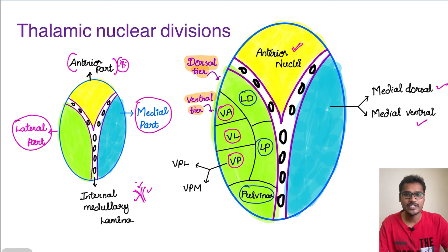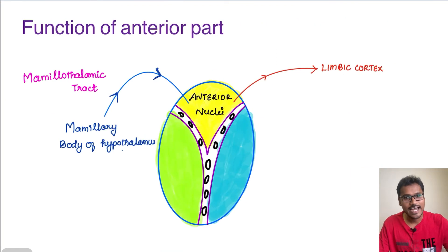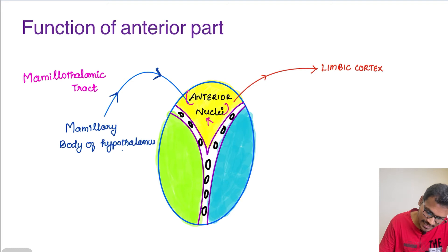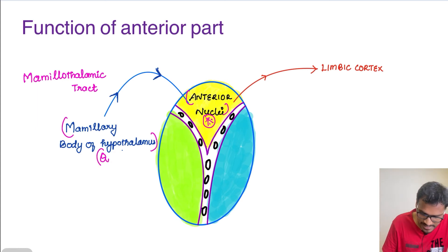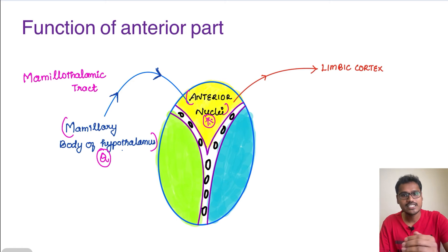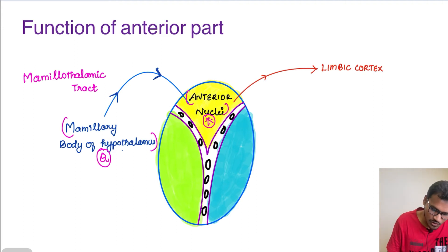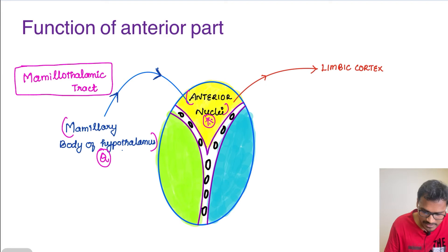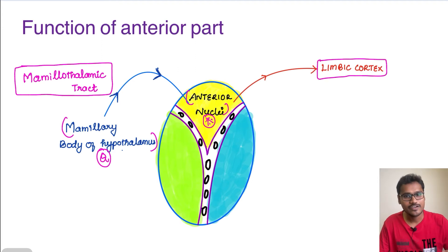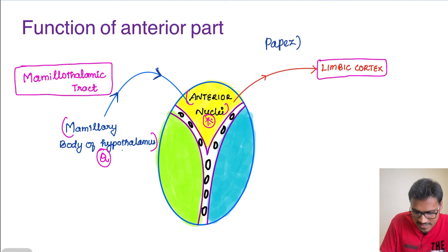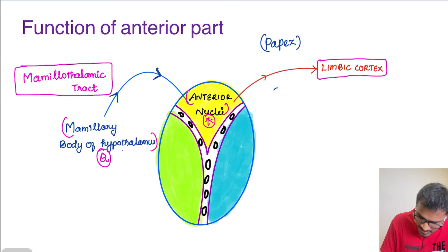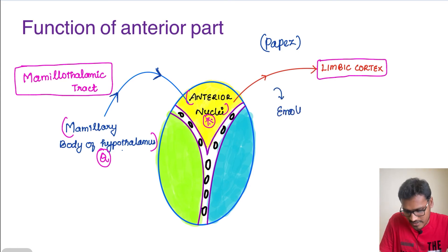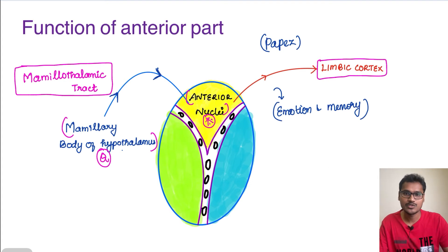Starting with the anterior part: the anterior nuclei receives information from the mammillary body of the hypothalamus via the mammillothalamic tract. The output from the anterior nuclei goes to the limbic cortex. This entire connection is part of the Papez circuit, which we will also read about in the limbic system. The limbic system is primarily involved in emotions and memory, so the anterior nuclei's primary function is emotion and memory through the Papez circuit connections.